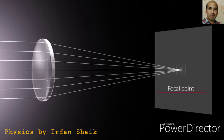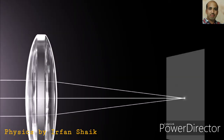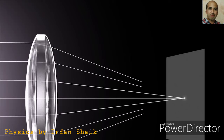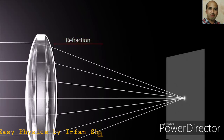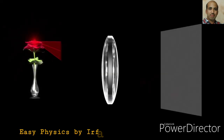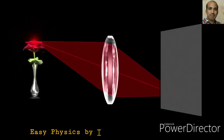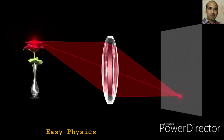When a light ray passes through a lens, it bends. This phenomenon is called refraction. When light rays from an object pass through a lens, it produces an inverted image.